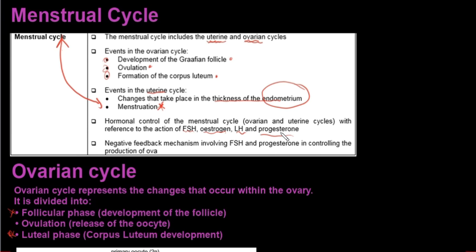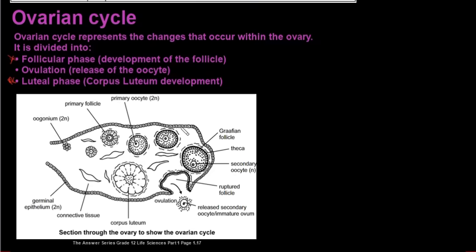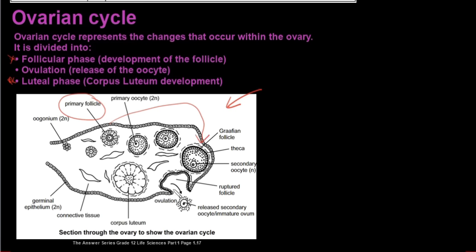The ovarian cycle is everything that happens in the ovary, but it's still important with regards to the uterine cycle, as everything that happens in the ovary can also influence what happens in the uterus. The ovarian cycle basically kicks off with the pituitary gland in the brain secreting the hormone FSH — the follicle stimulating hormone — which stimulates the development of the primary follicle into the Graafian follicle.